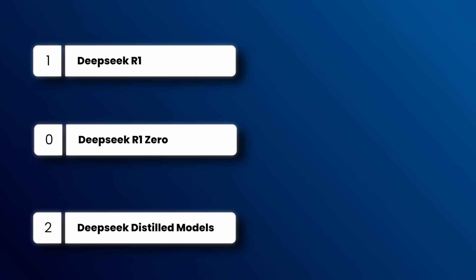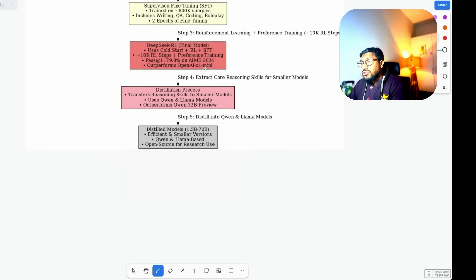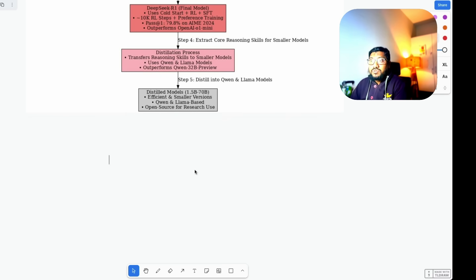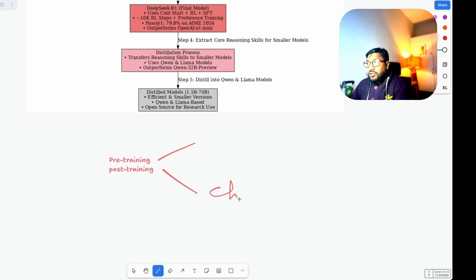There are models like R1-Zero and also the distilled models. Before everything, this is only what we call post-training. Unlike every other LLM process, this is only post-training. If you're not familiar with post-training: generally, when you create an LLM there is pre-training and then post-training. Pre-training is where you create a base model, and post-training is where you get the chat model or the instruct model.